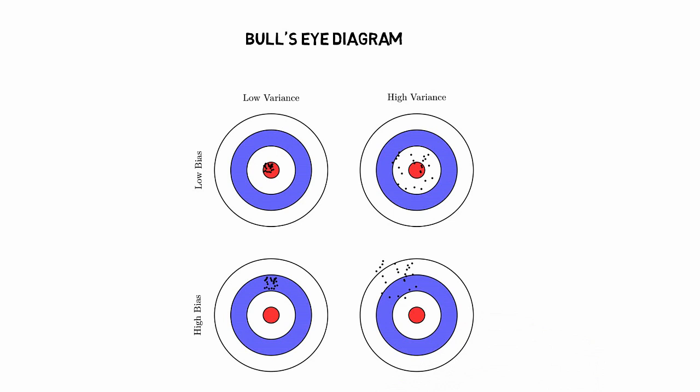As you can see, the values predicted are on the red circle which is our target. Having high variance and low bias means the model is consistent but the predictions are far away from the target. Even this situation is not desirable.